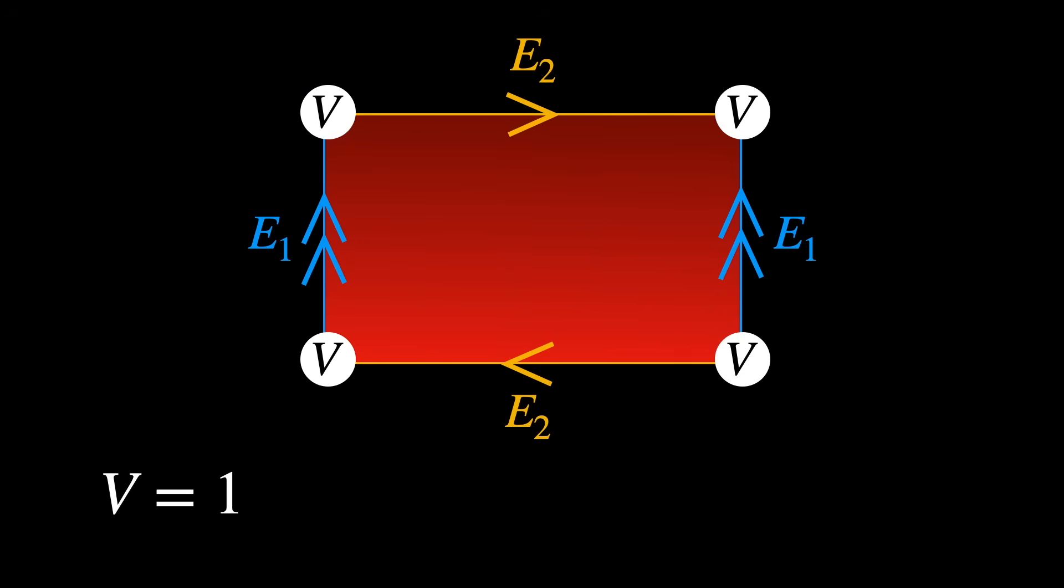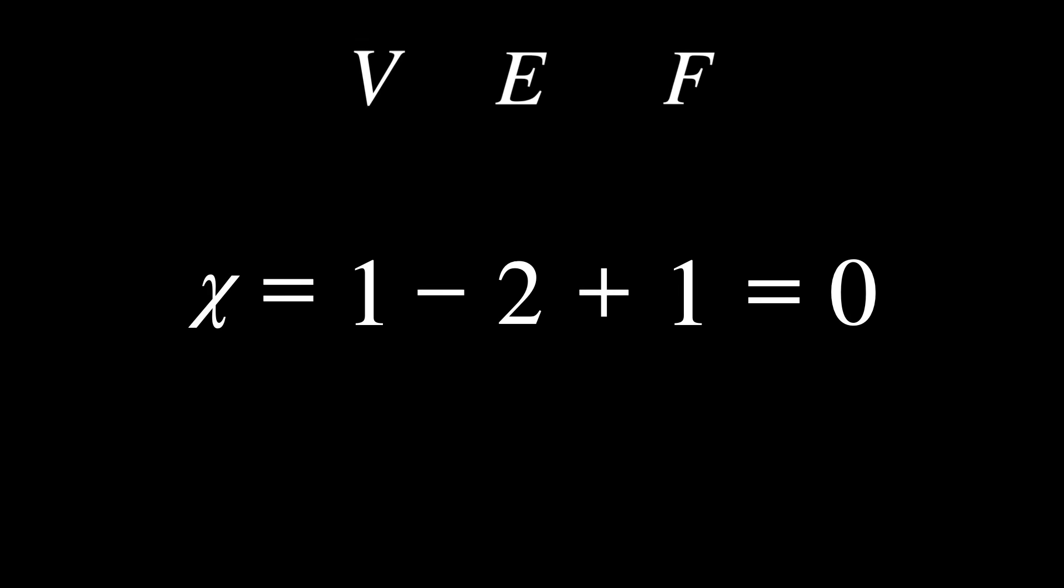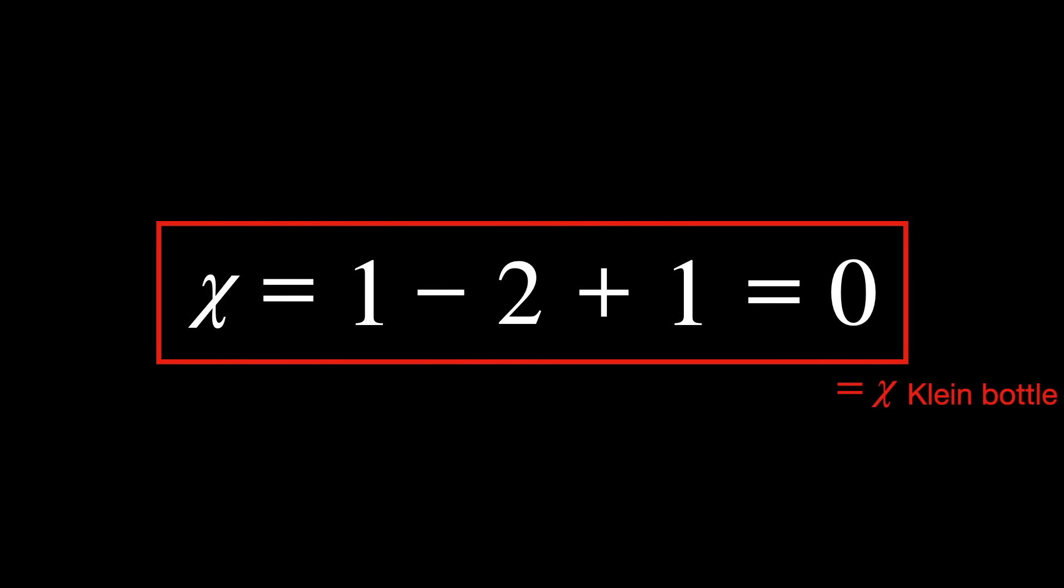Now it is easy to count the number of vertices, edges, and faces. There is one vertex, two edges, and one face. As a consequence, its Euler characteristic is zero, which is the same as the Euler characteristic of the Klein bottle, and it is different from the Euler characteristic of the cross cap, or real projective plane, which is one instead.